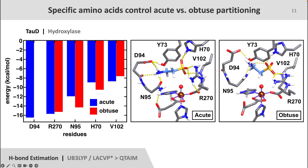After running classical MD, we next performed electronic structure calculations on the active sites of the enzymes to more accurately measure the strengths of all hydrogen bonds in either the acute or obtuse conformations. In this plot, you can see that when we force a hydroxylase to sample the obtuse angles of a halogenase, some of the hydrogen bonds remain intact. However, more importantly, some of them break, such as the hydrogen bond between aspartate-94 and the substrate taurine. You can see the breaking of this interaction in these two structures. In the first structure, the salt bridge between Asp-94 and taurine is intact, but when TauD is forced to sample halogenase angles, we can see that it breaks. These results suggest that Asp-94 could be a possible target for future mutagenesis studies, as mutating aspartate-94 would favor the obtuse positioning angle, and the results also show that there are specific amino acids and non-equivalent interactions that control the acute positioning.